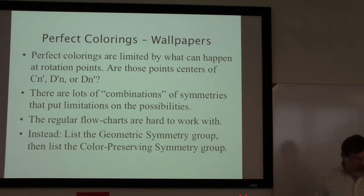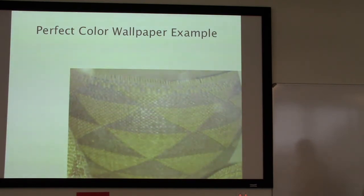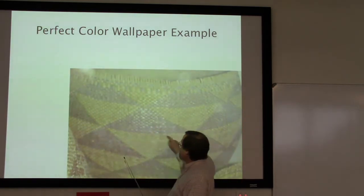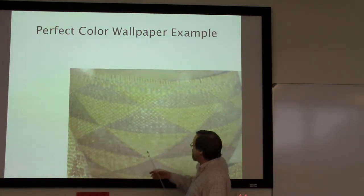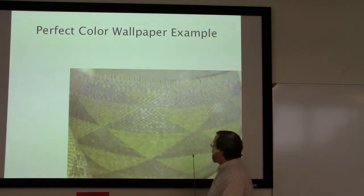Instead, the way we're going to catalog these is by listing a pair of groups: we list what the geometric symmetry group is for the wallpaper pattern, then we look at just the color preserving symmetries and figure out what the color preserving symmetry group is. Let's do a couple of examples. Here is a perfect colored group, and if we go through our regular flow chart, the first question is: are there rotation points? These are not equilateral triangles, so there's no one-third rotation, but there is a one-half rotation point.